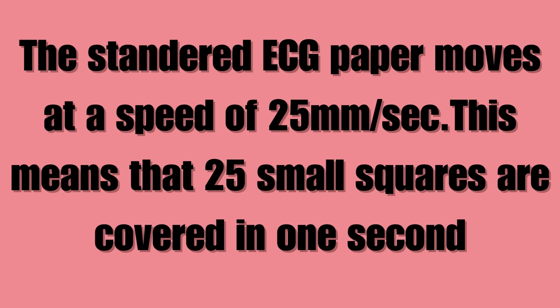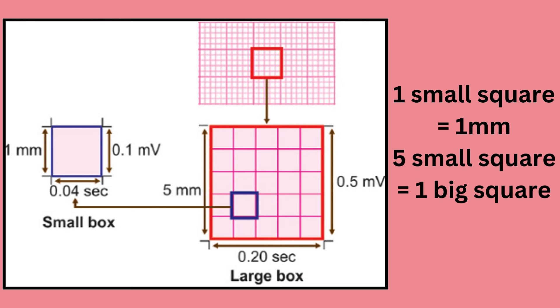The standard ECG paper moves at a speed of 25 mm per second, meaning that 25 small squares are covered in 1 second. Each 1 mm small horizontal box corresponds to 0.04 seconds, with heavier lines forming larger boxes that include 5 small boxes and hence represent 0.20 seconds intervals.